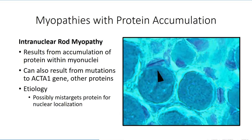Presentation for intranuclear rod myopathies is similar to that for nemaline rod myopathy, although they tend to be less debilitating. The protein aggregates in nemaline rod myopathy tend to accumulate between and within the myofibrillar complex, which is expected to have a dramatic effect on normal contraction — an issue that does not arise with intranuclear accumulations. Additionally, the multinuclear organization of the muscle fiber and the presence of satellite cells, which serve as a reserve source of new myonuclei, mean that damage to myonuclei is not as concerning as damage to other aspects of the muscle cell.